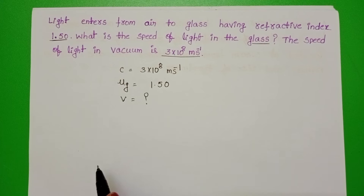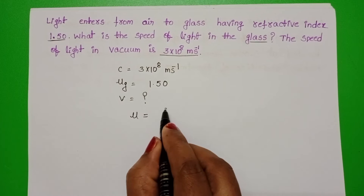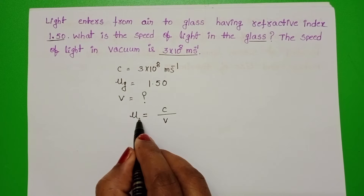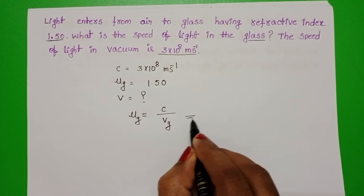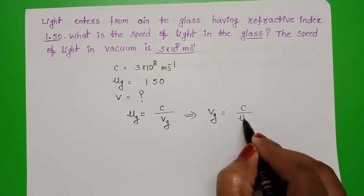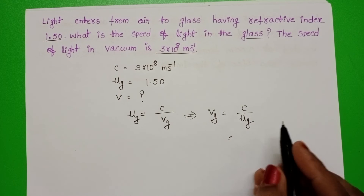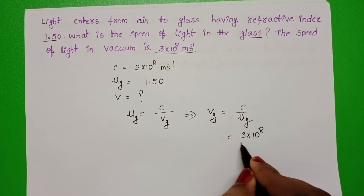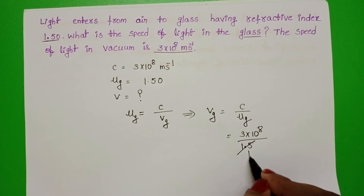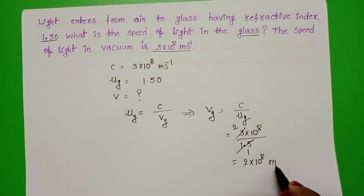Take the formula of the absolute refractive index. Refractive index is equals to speed of light in vacuum divided by the speed of light in the given medium — here, the medium is glass. From this, speed of light in glass is equals to speed of light in vacuum divided by refractive index of the glass. In place of C, substitute 3 into 10 power 8. Refractive index of the glass is 1.5. So the result is 2 into 10 power 8 meter per second.